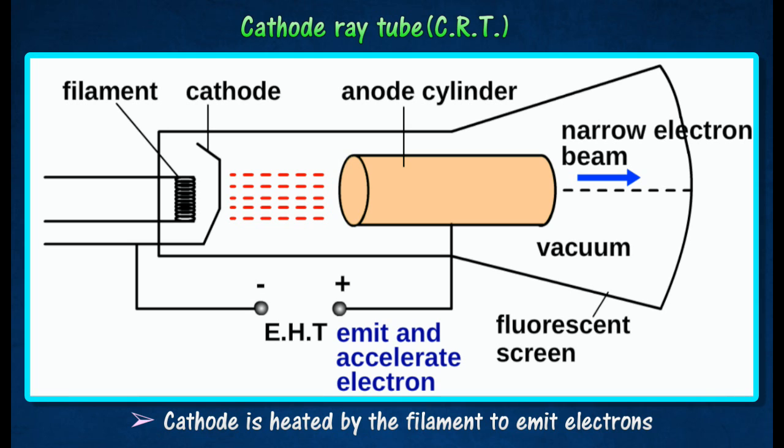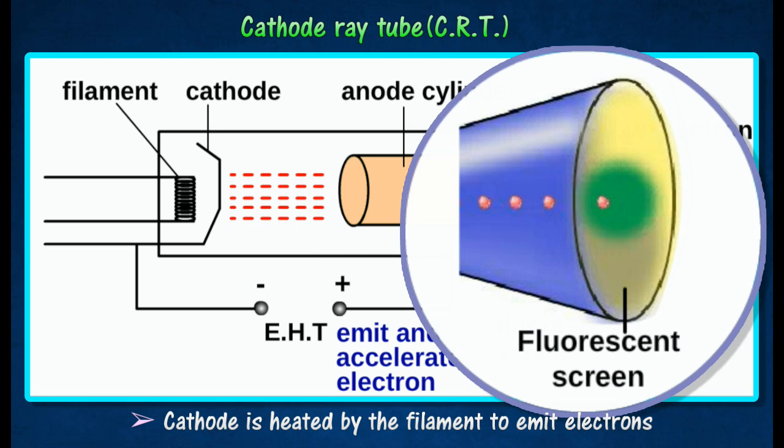This narrow beam of electrons is called the cathode rays. The cathode rays then strike the fluorescent screen to produce a bright spot by converting their kinetic energy into light energy.